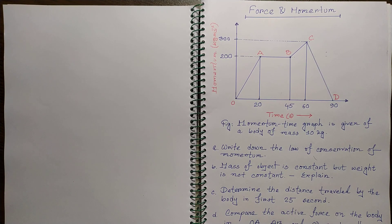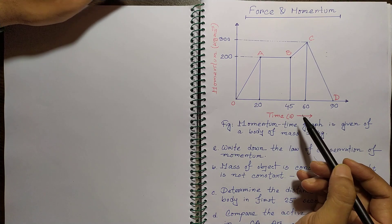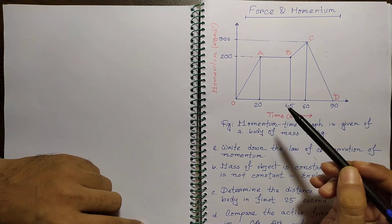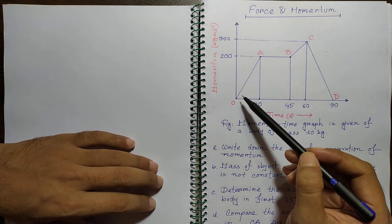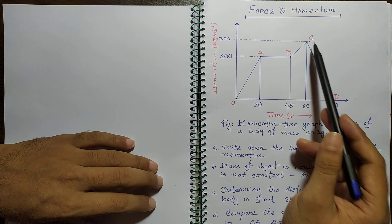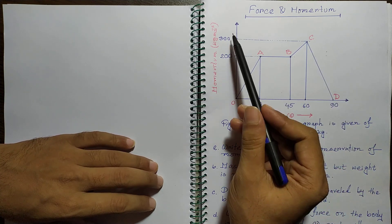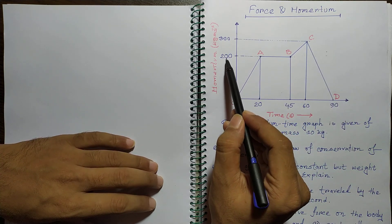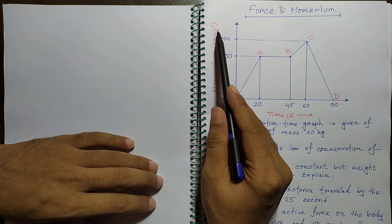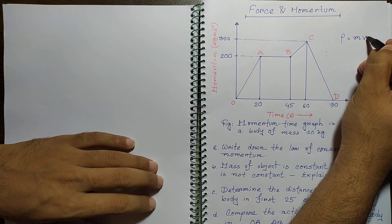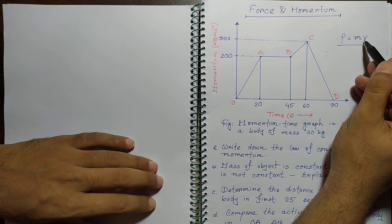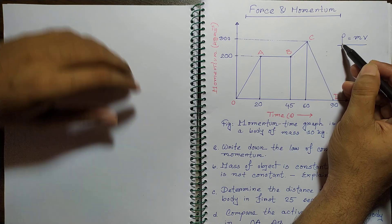Assalamu alaikum warahmatullah, my dear viewers and listeners. Welcome to another creative solutions from chapter Force. This is about force and momentum. A momentum-time graph is given of a body of mass 10 kilograms. You know that momentum p equals mv — mass times velocity is the momentum.